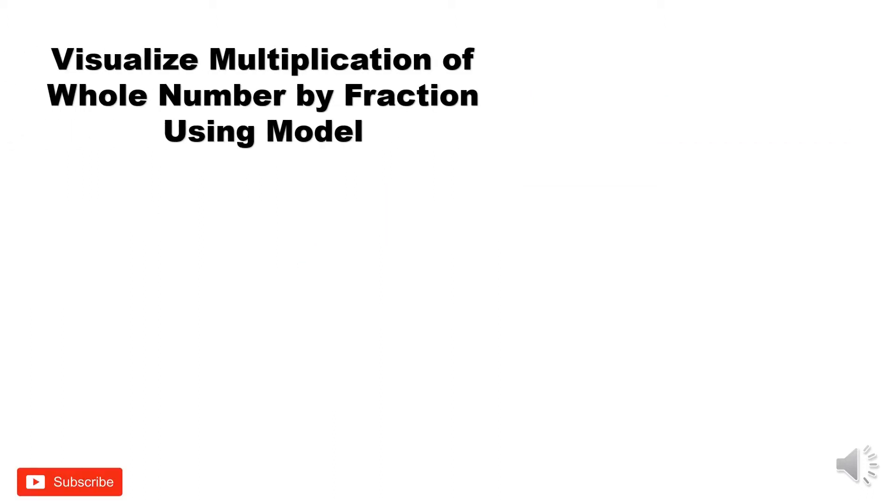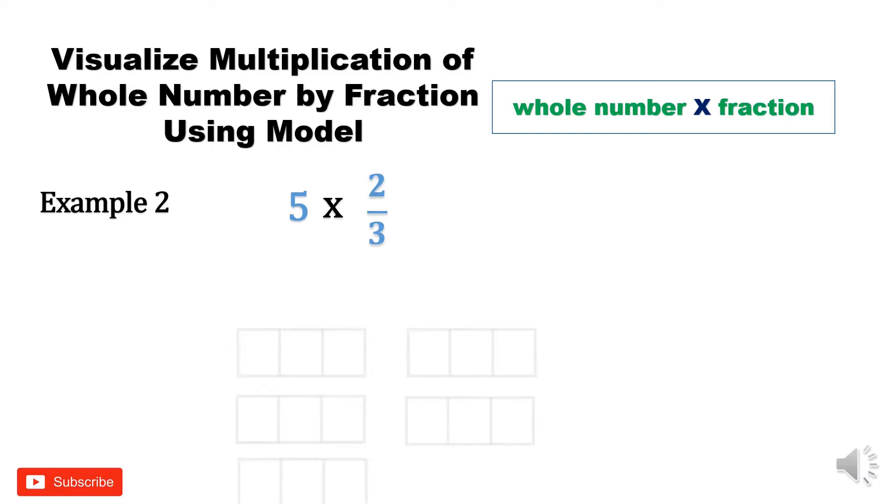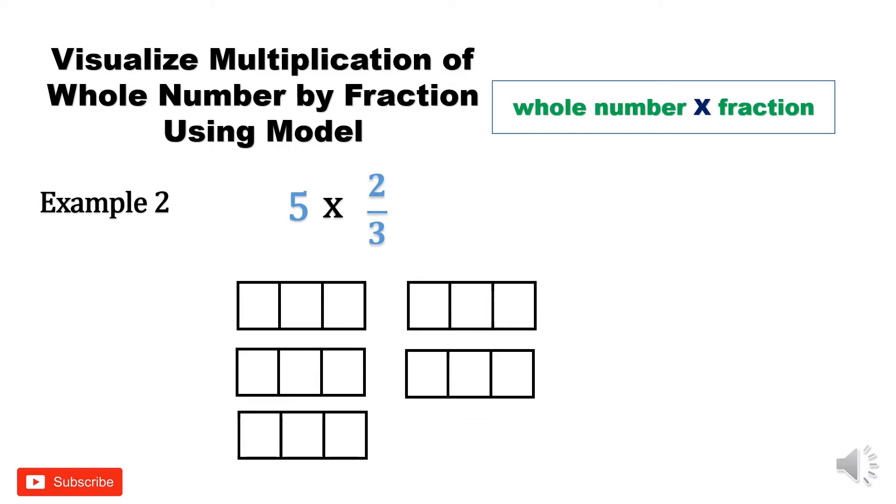Another example of multiplying whole number by fraction. 5 times 2/3. 5 sets of 2/3. Multiply whole number by numerator. 5 times 2 equals 10. Copy denominator 3.